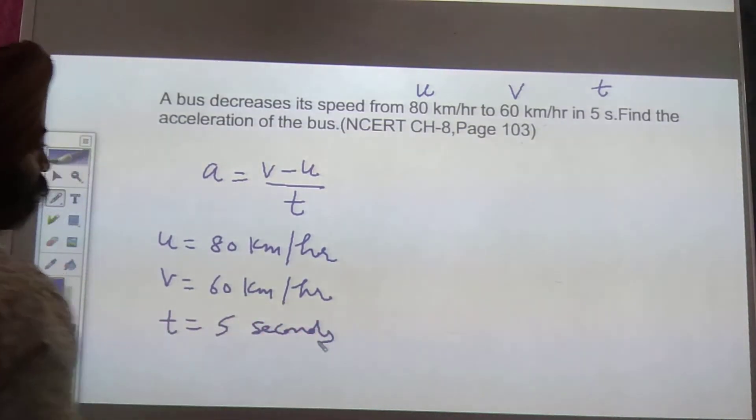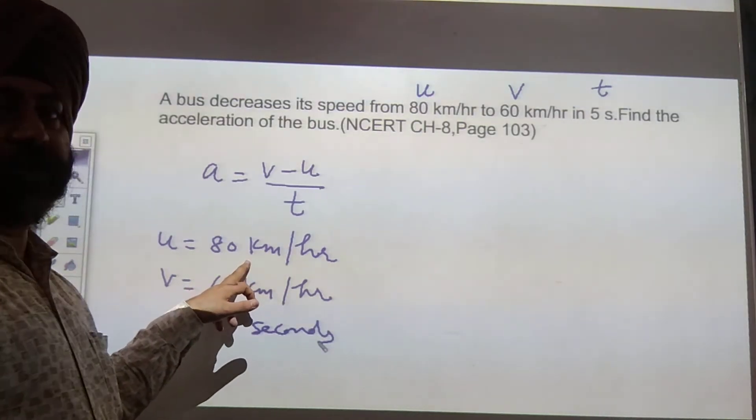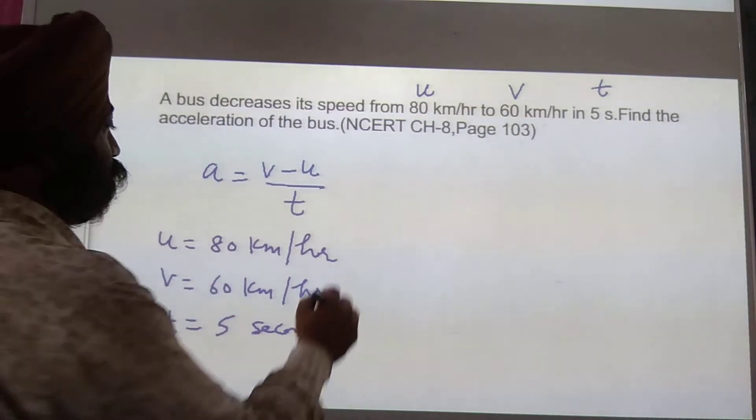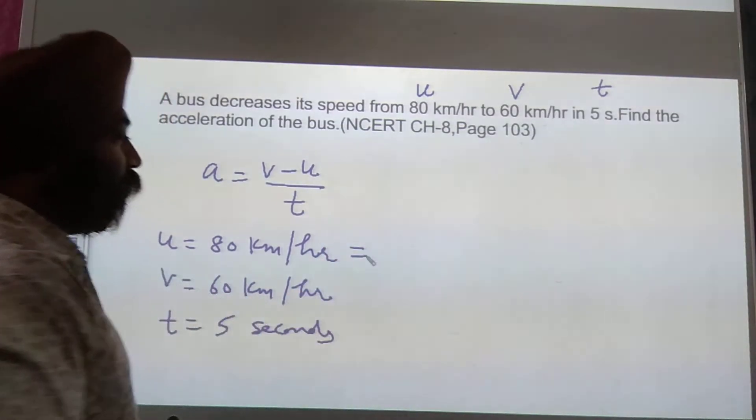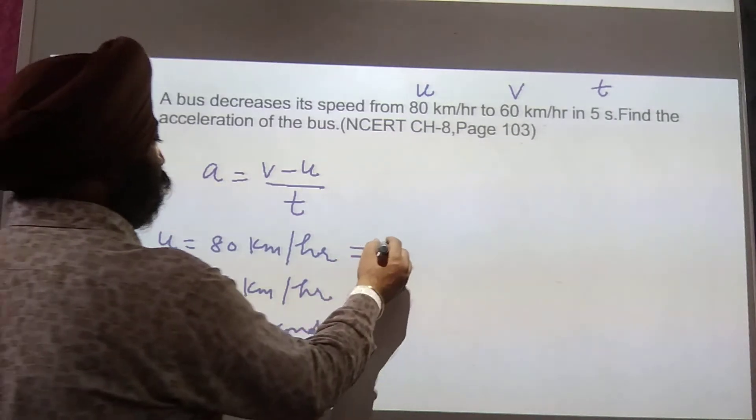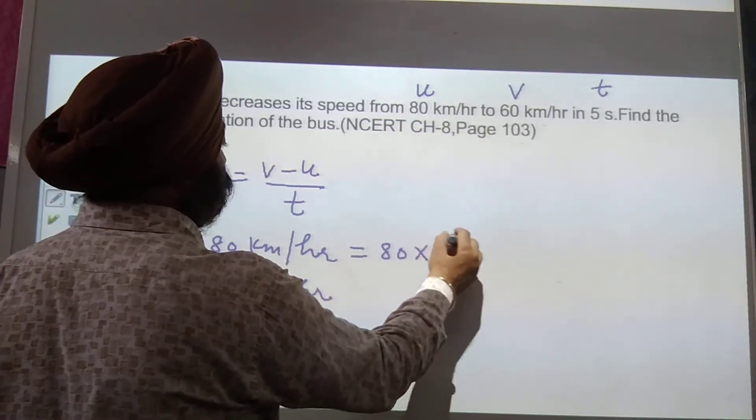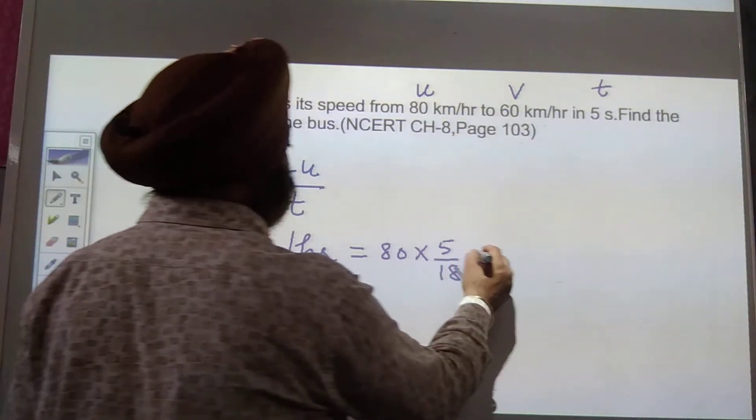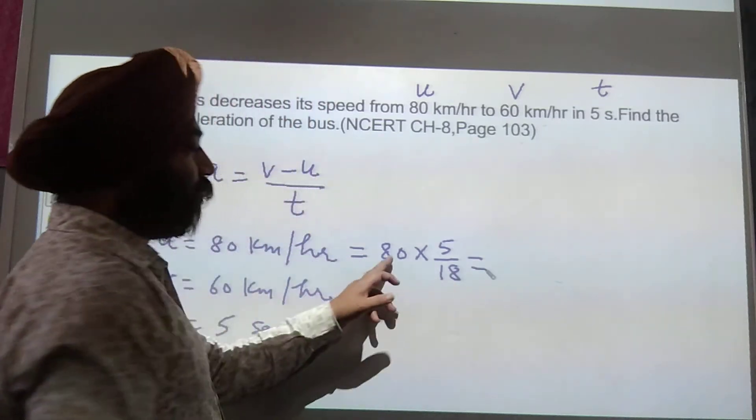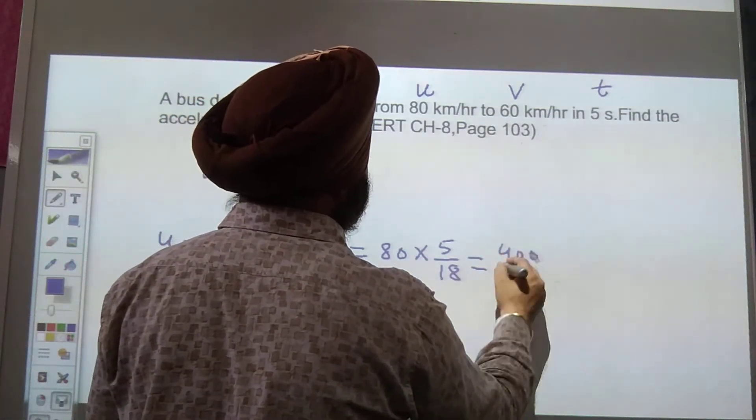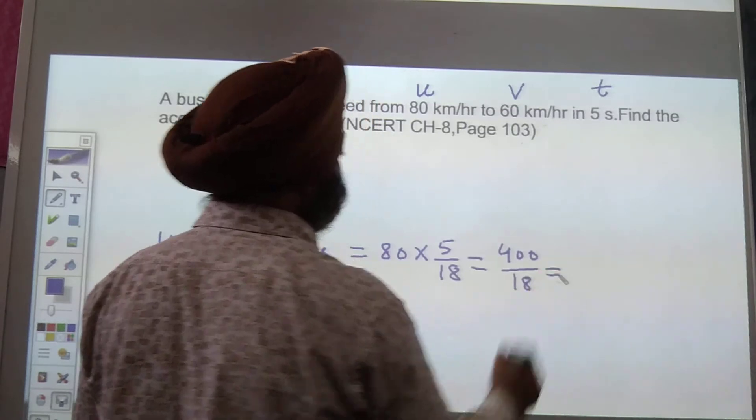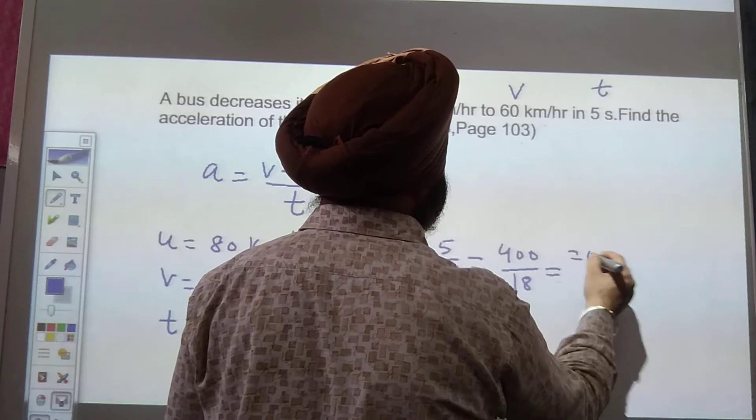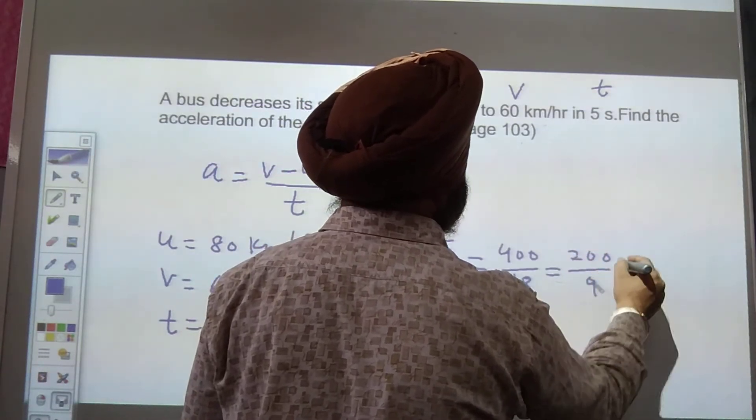So firstly, we have to convert the speed which is given in km per hour into m per second. How to convert km per hour into m per second by a shortcut trick we have already discussed: multiply it by 5 upon 18. Now solve it. 80 multiplied by 5, we get 400 upon 18. Now we can cancel it. So we will get 200 upon 9 meter per second.